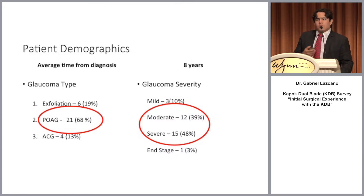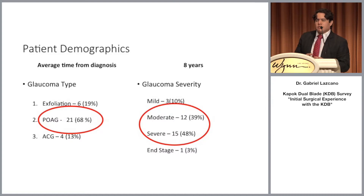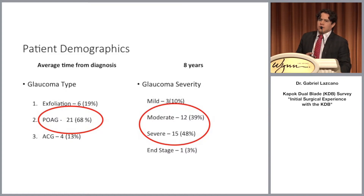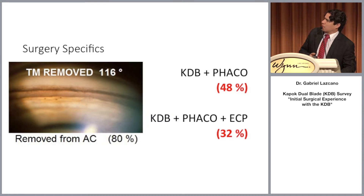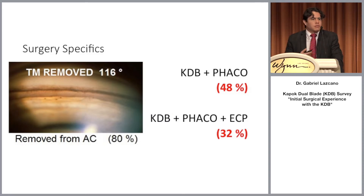It's important to note that the average damage of the disease was moderate to severe in these patients, and this perhaps correlates with the number of years since their diagnosis. It's very likely that in many patients the disease was already advanced by the time of diagnosis. All surgeries were combined in 48% of the cases with FACO and in 32% with FACO plus ECP.